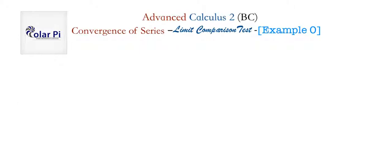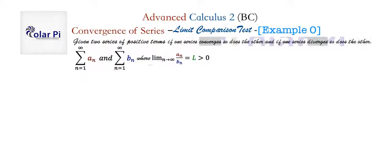Okay, so with that, let's state the so-called limit comparison test. This is what it says. Given two series of positive terms, if we take the limit as n goes to infinity of a sub n divided by b sub n, and we get some finite number L that's greater than zero, then both series converge or both series diverge.